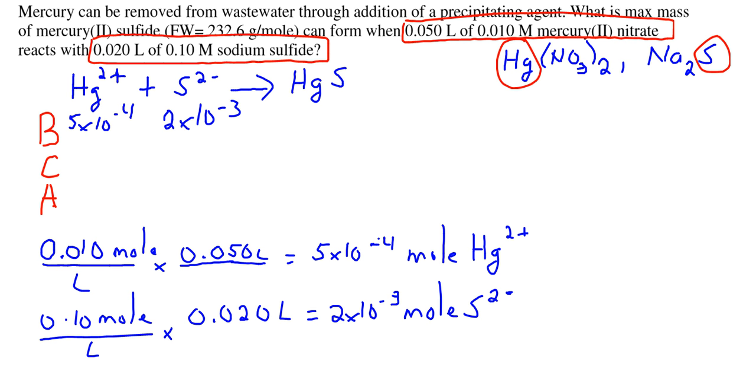Looking at this, we can see, due to the 1 to 1 ratio, that mercury is going to be the limiting reagent since it has the least number of moles.